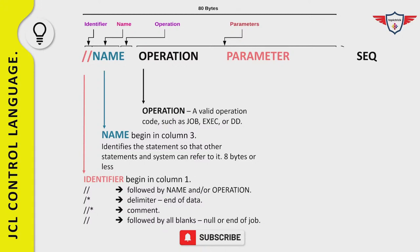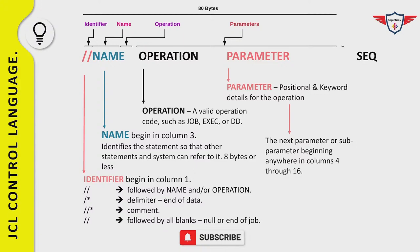The operation field is used to specify a valid operation code such as JOB, EXEC, and DD for job card, execute statement, and DD statement respectively. The parameter field is used to specify parameters based on the operation field, and there are two kinds: positional parameters and keyword parameters. If it's a JOB operation, parameters relate to the job card; if it's an EXEC statement, they relate to the execute statement; and if it's a DD statement, they relate to DD statements.